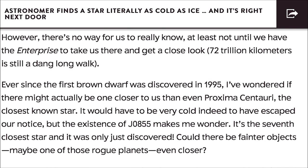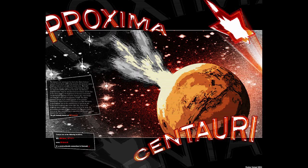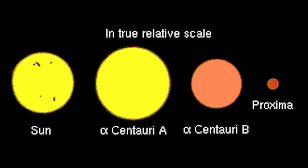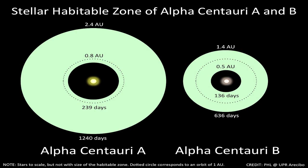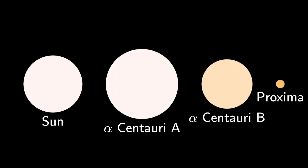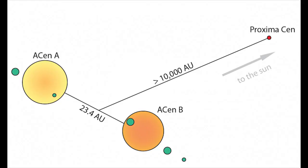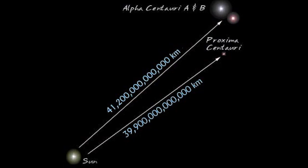We know such objects exist—that's in bold—and there must be many billions of them in deep cold space. However, there's no way for us to really know, at least not until we have the Enterprise to take us there and get a closer look.